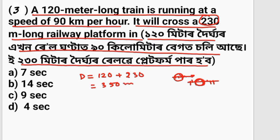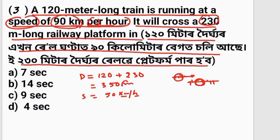The speed is 90 km per hour. Using the formula: distance equals speed multiplied by time. Converting 90 km/h to meters per second, we calculate the platform length accordingly.